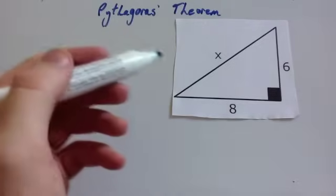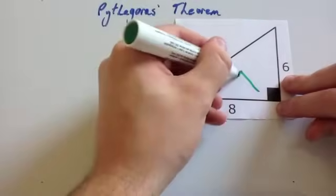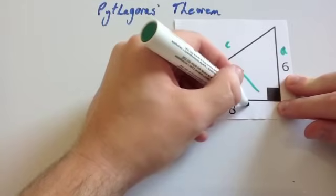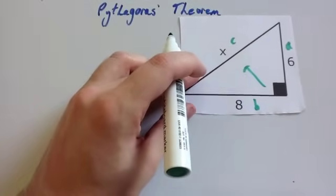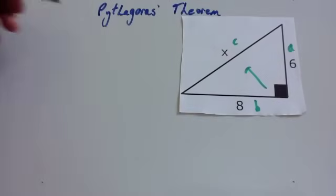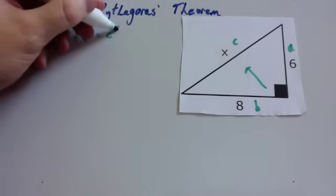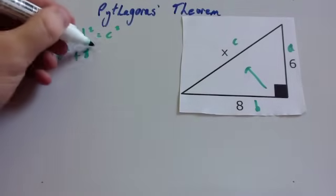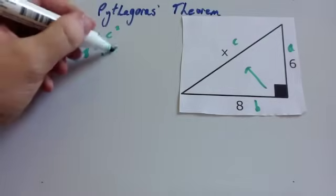Let's look at another example. Again, we're trying to find the longest side of this right-angled triangle, because it's the hypotenuse, so we'll call that c. The shortest side is a — six — and the middle side is b — eight. So we're going to use Pythagoras' theorem to work out the length of c, the longest side. So we're going to use a squared plus b squared equals c squared. So a is six and b is eight, so you get six squared plus eight squared equals c squared, or x squared.